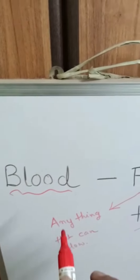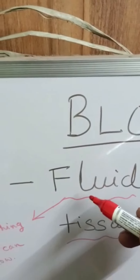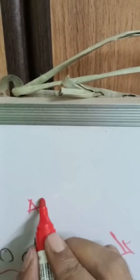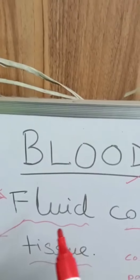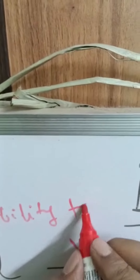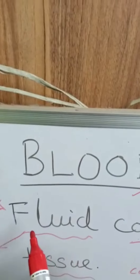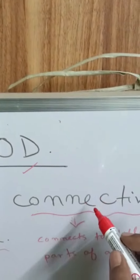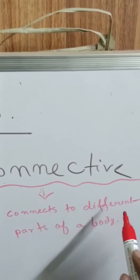So what is blood? Blood is called a fluid because it has the ability to flow. Blood has the ability to flow, and hence it is called a fluid. And it is also a connective tissue because it connects to different parts of a body.